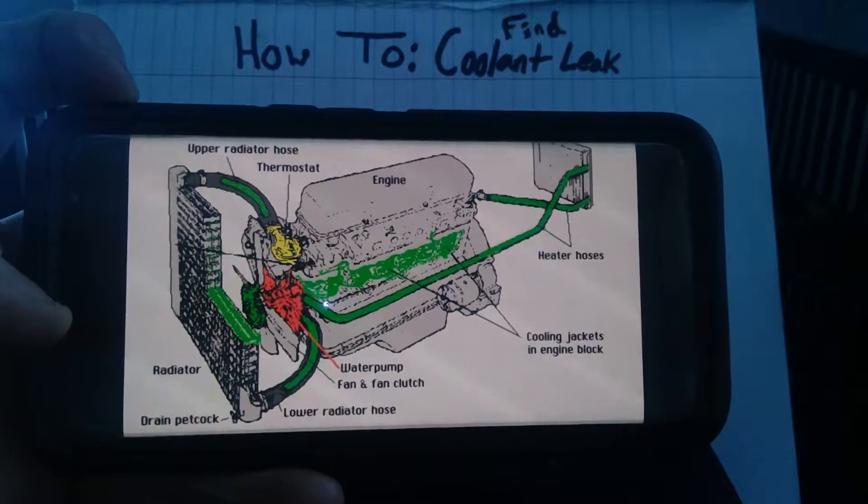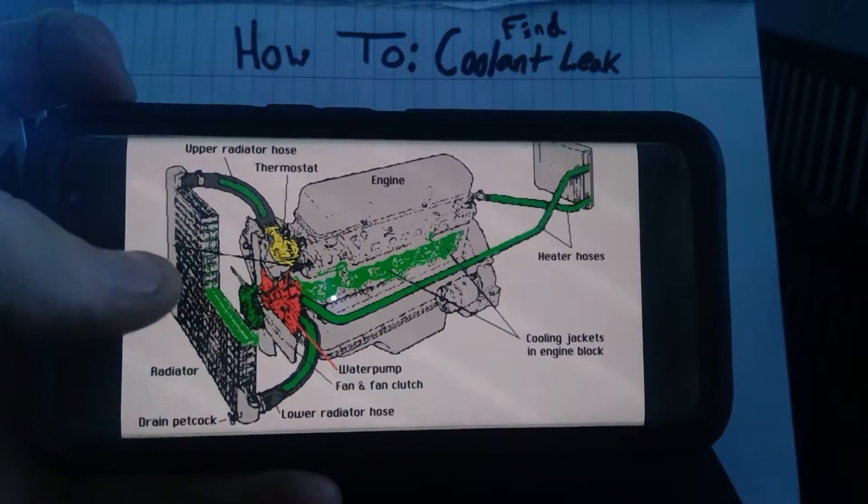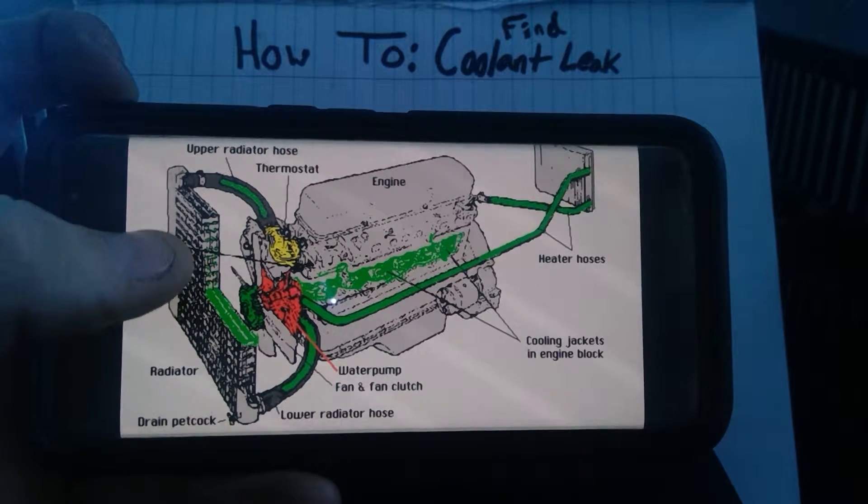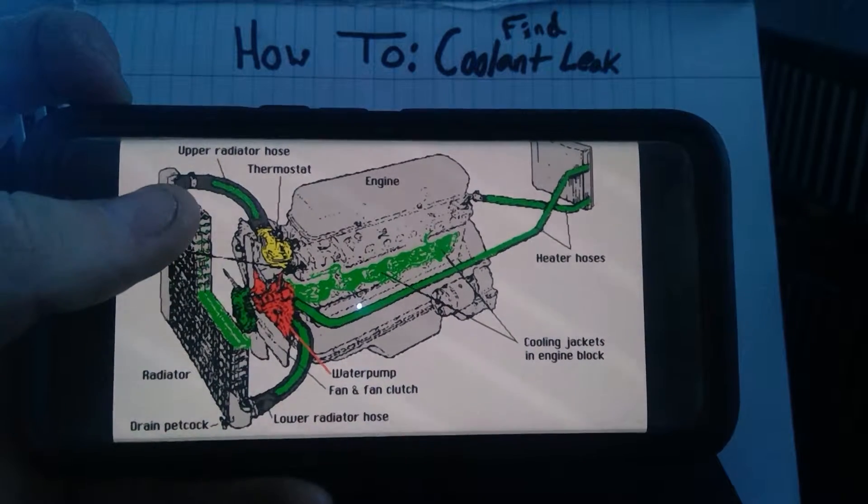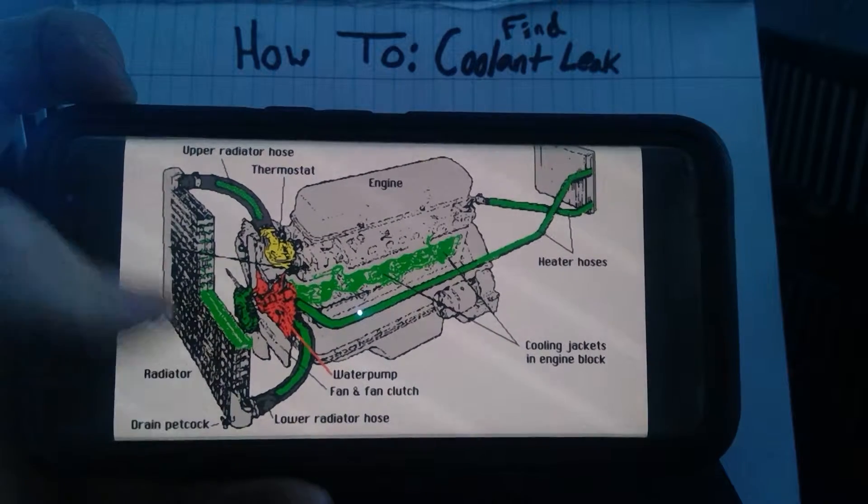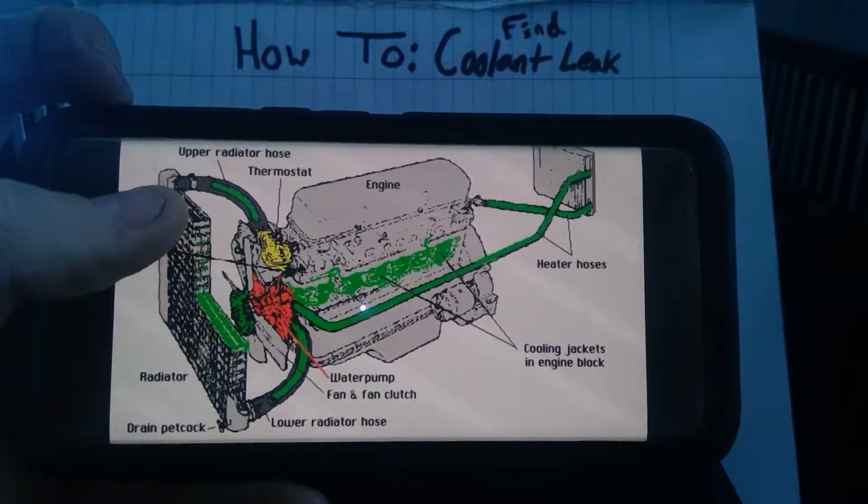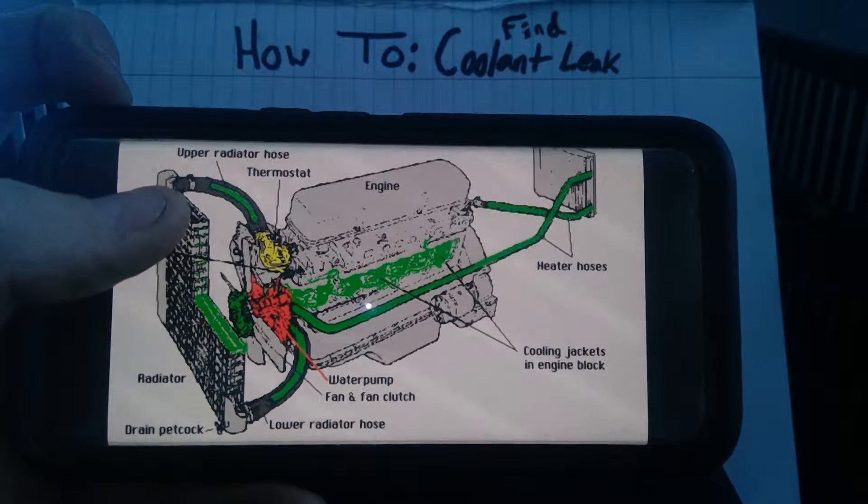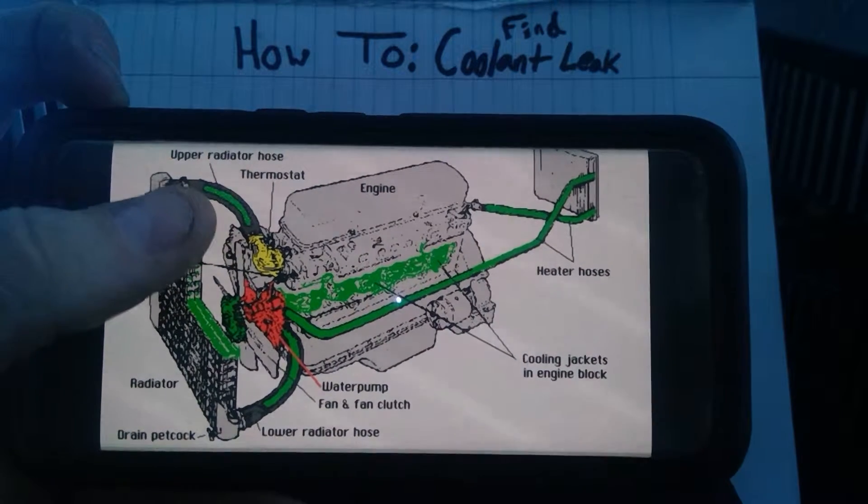Hey guys, Tanner here. This is how to find a coolant leak. This is a radiator up here, and this is an upper radiator hose. This is a lower hose. These are very important areas where it could be leaking because these clamps that go from the hose to the radiator could be loose.